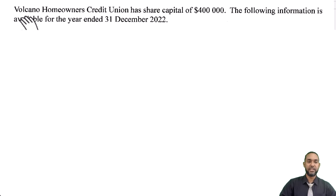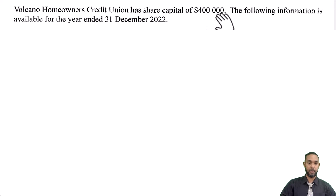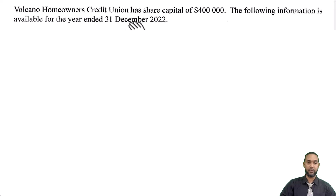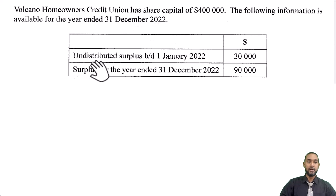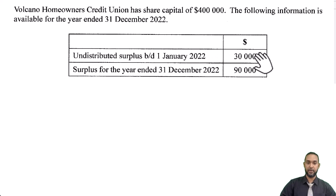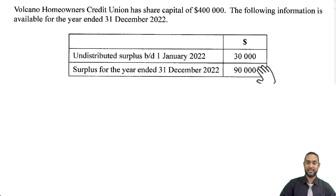With that said, let's get into the question. It says Volcano Homeowners Credit Union has a share capital of $400,000. The following information is available for the year ended 31 December 2022: undistributed surplus brought down 1 Jan 2022 — $30,000, and the surplus for the year ended 31 December 2022 — $90,000.